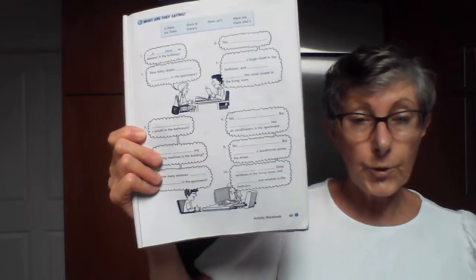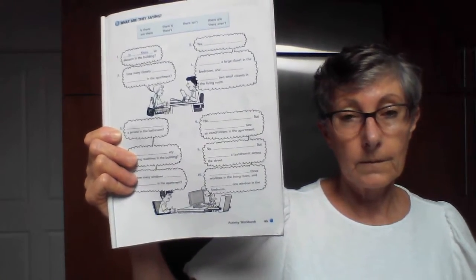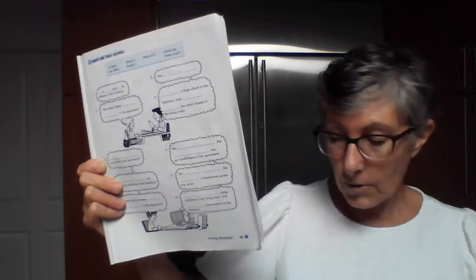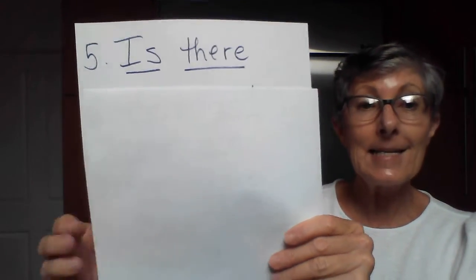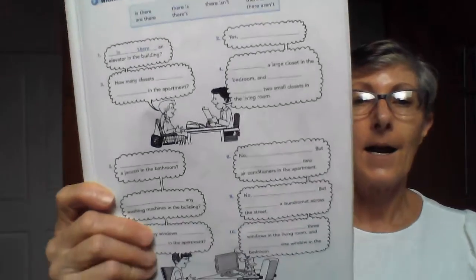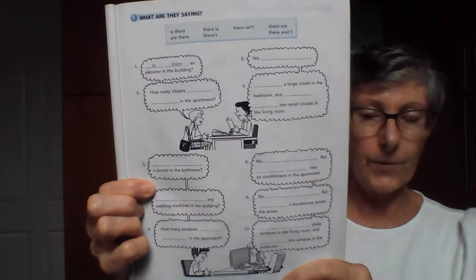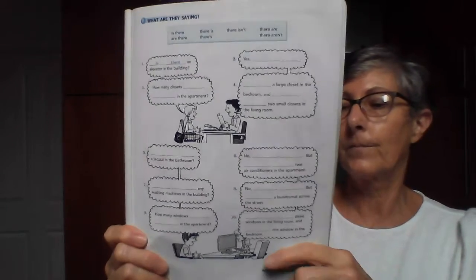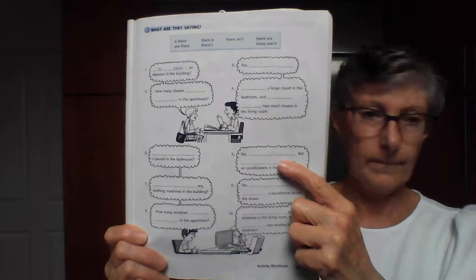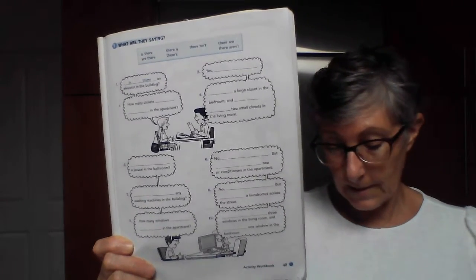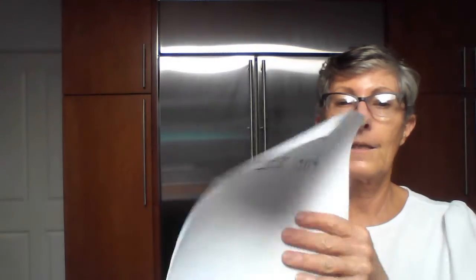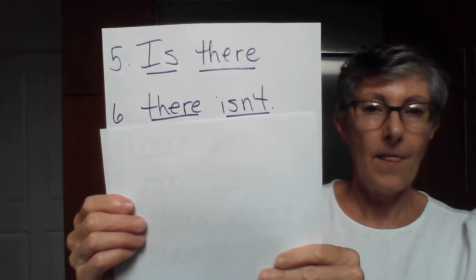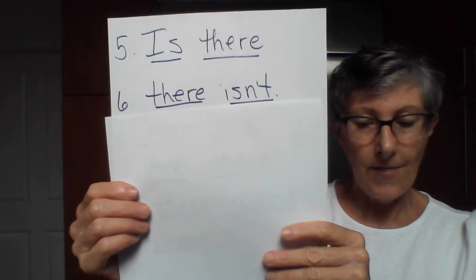Now for the second conversation — a jacuzzi. Is this going to be singular or plural? Correct — singular! So the question is going to be: 'Is there a jacuzzi in the bathroom?' And the answer is going to be singular — 'there isn't.'